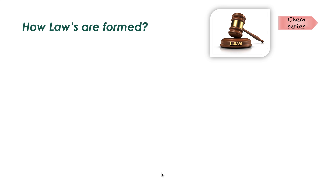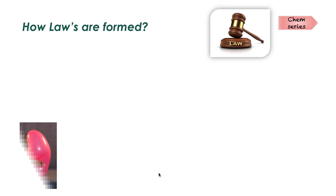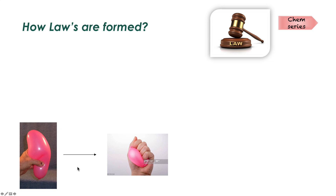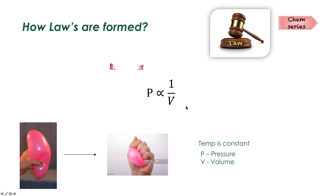Many observations should be recorded for an experiment using different temperatures and pressures. For example, if we take a balloon filled with any gas and hold the temperature constant, squeezing the gas into half its original volume causes the pressure to double. If we repeat this experiment using many different gases, we can form a law. Scientists have done this and formed the law in which pressure is inversely proportional to volume — which is nothing but Boyle's Law.